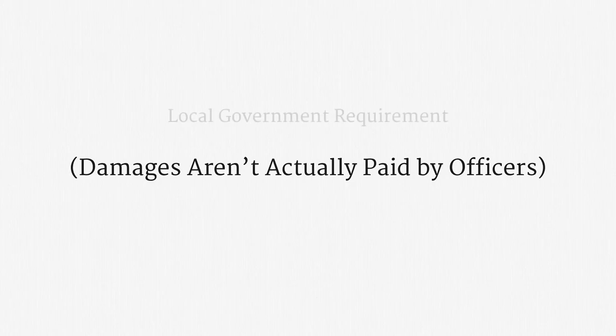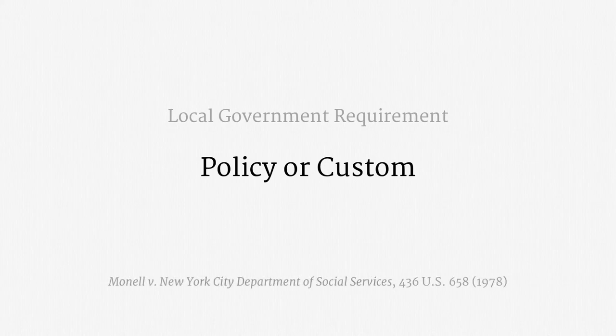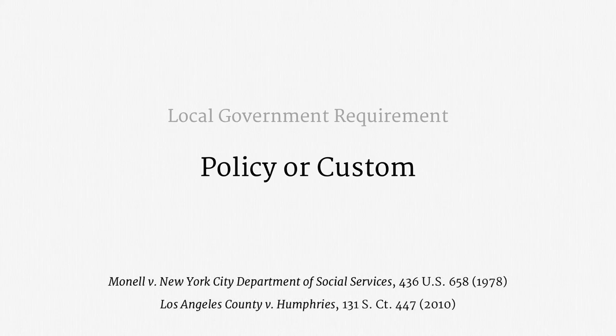The very last point about constitutional damages liability is a special requirement when suing a local government under Section 1983. A plaintiff has to show that the conduct arose from a government policy or custom. So, for surveillance purposes, a plaintiff can't sue a local law enforcement agency over an individual officer's misconduct — the plaintiff has to show an agency policy or custom of using that particular surveillance practice.